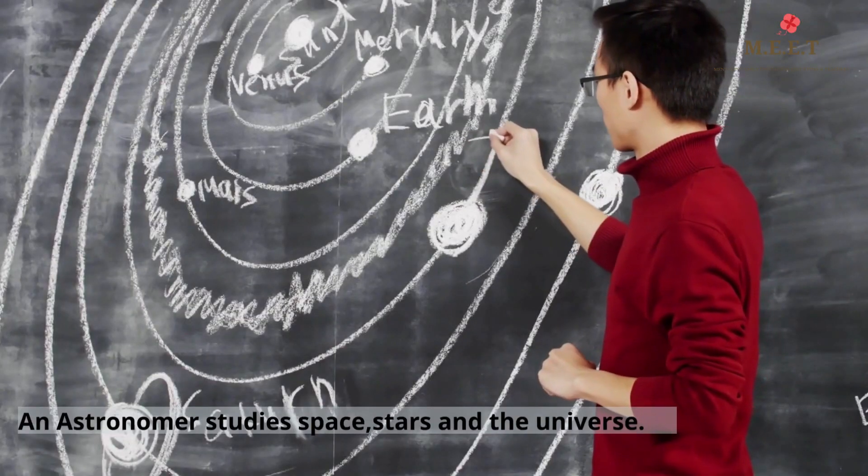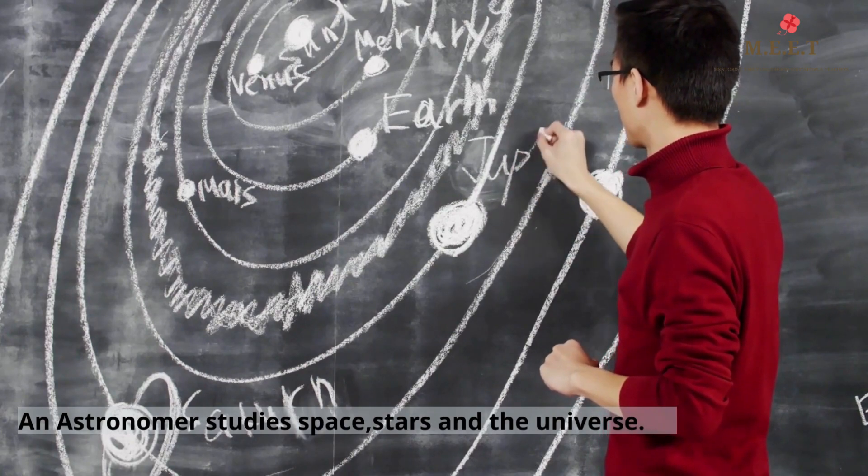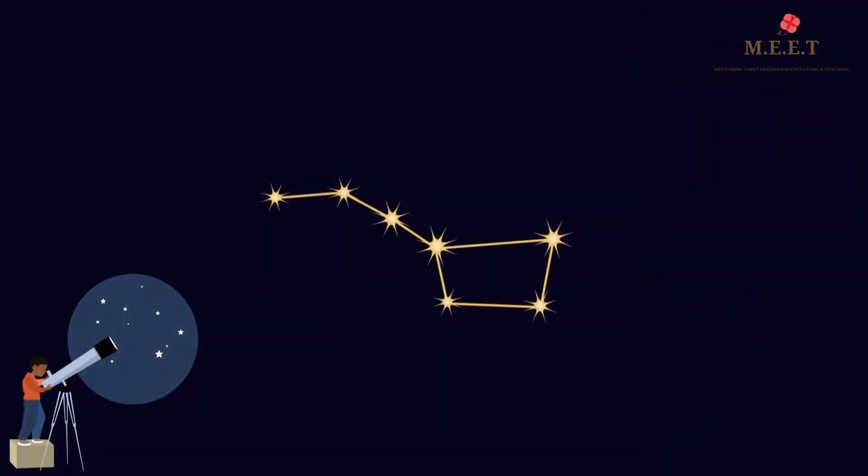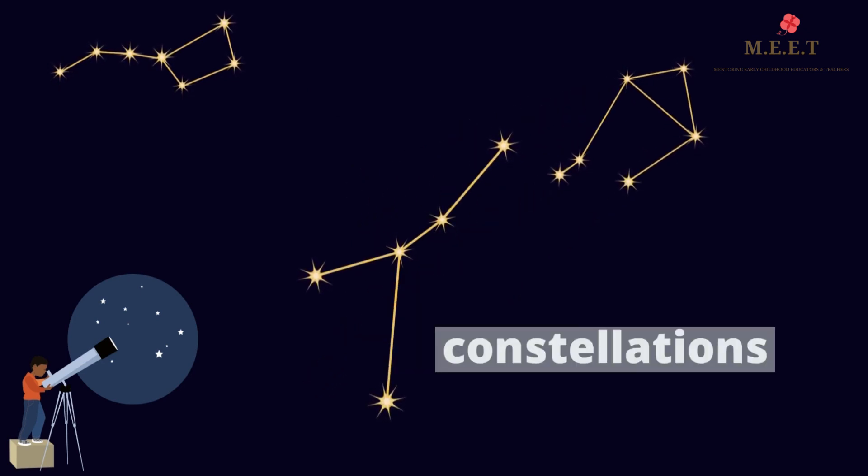The people who study space, stars and universe are called astronomers. These astronomers noticed that many of the brightest stars in our galaxy formed pictures in the sky. They call these pictures constellations.